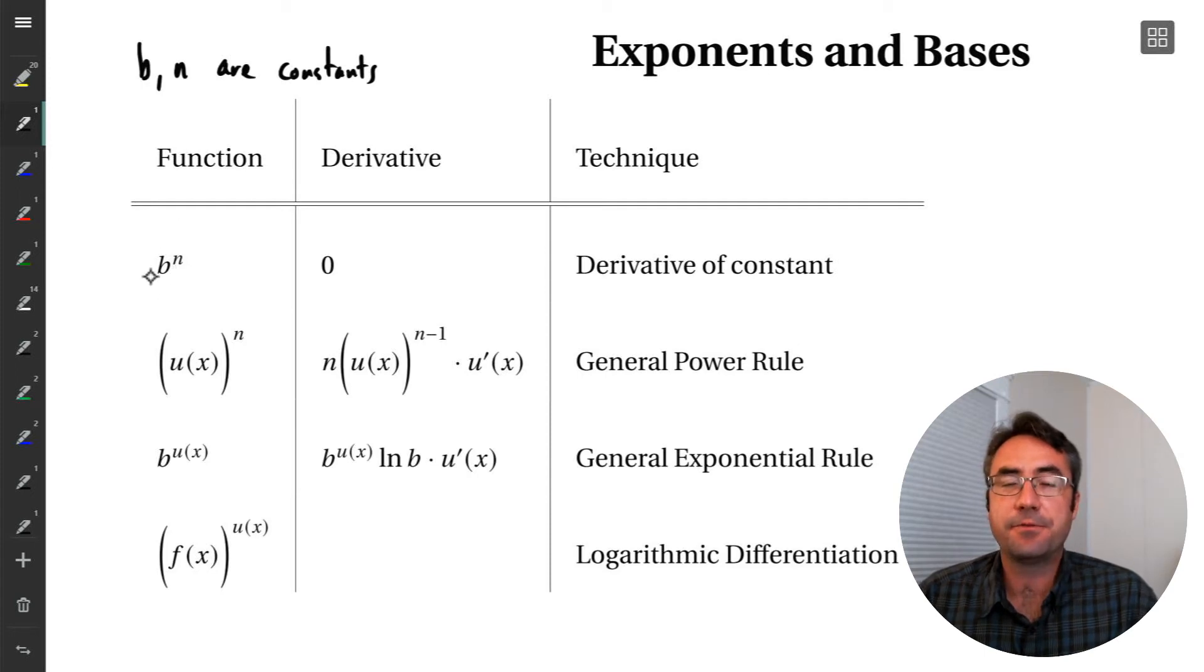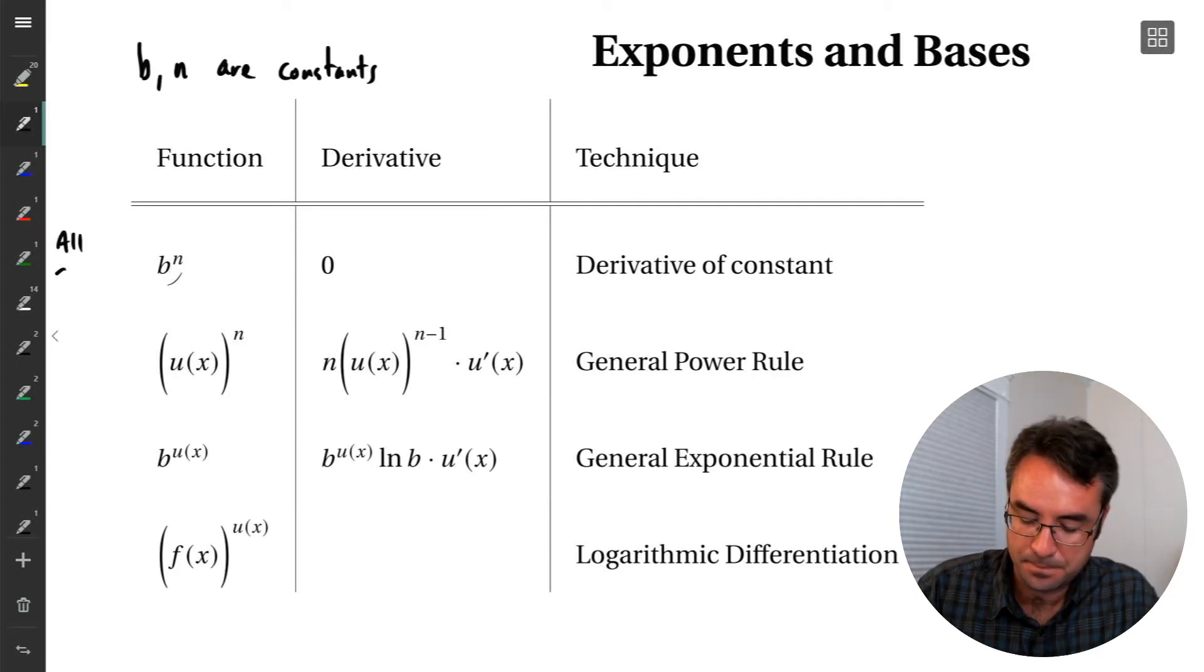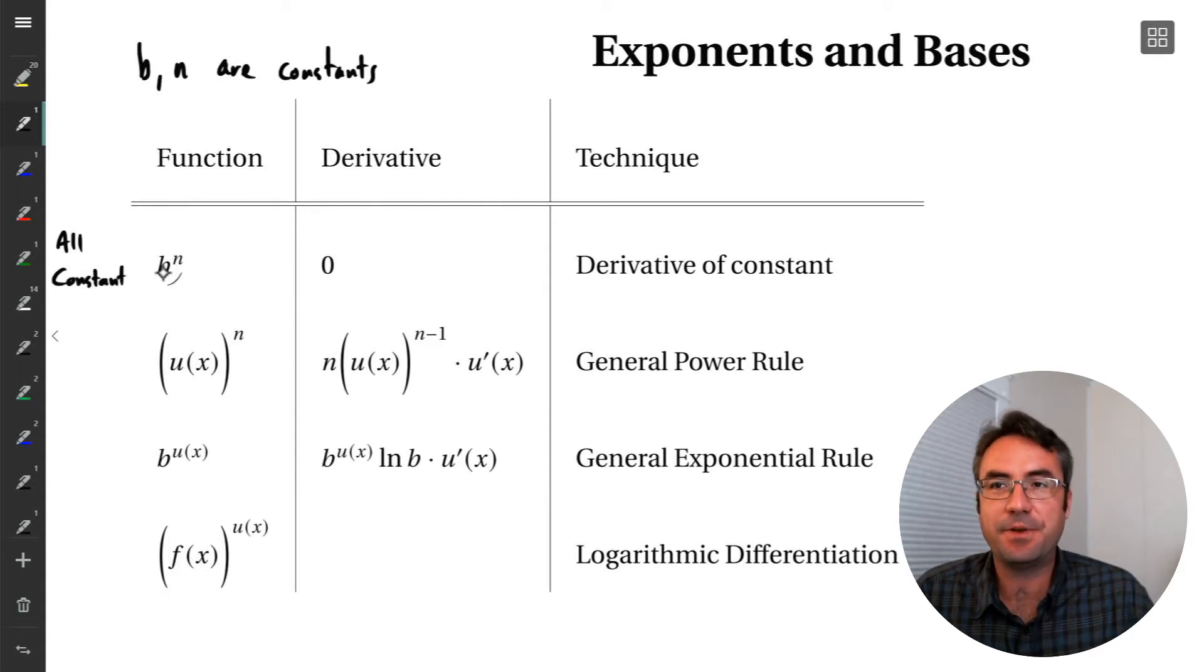So the first possibility, if we have a term that looks like an exponential, there's a base term and an exponent, they could all just be constants. And so if everything is constant, then the derivative is just zero. So even if it looks like, if this was like three squared, everything's a constant, derivative of a constant, no matter how fancy it's written, is zero.